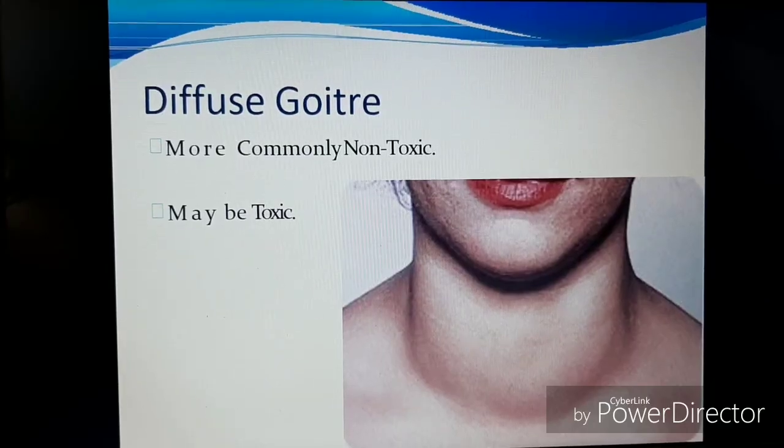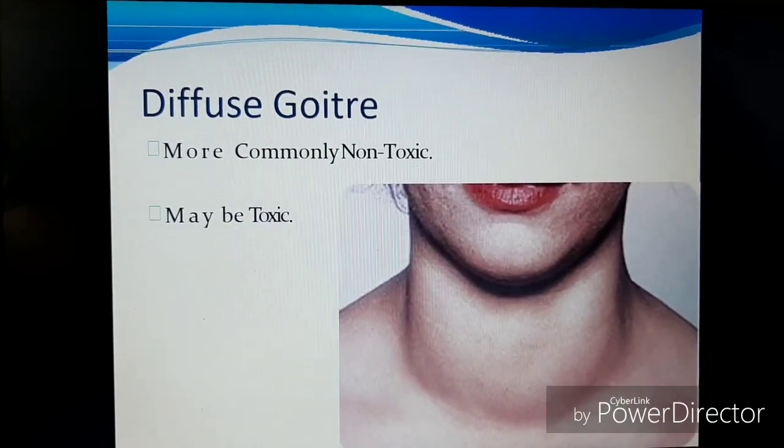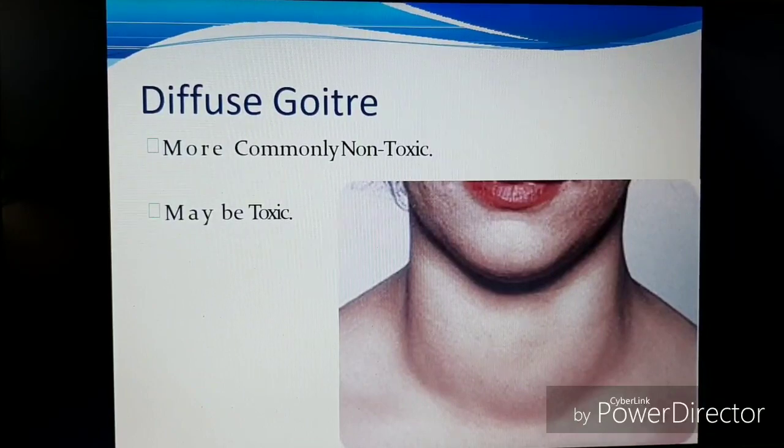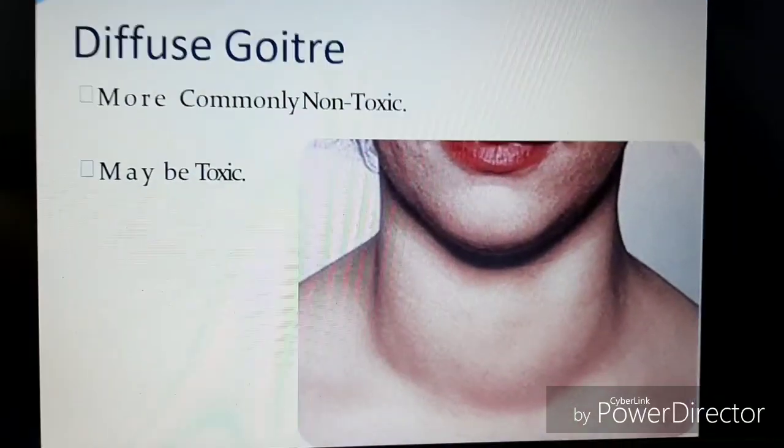Let us come to diffuse goiter. It is also known as Graves' disease, which you may have heard of many times. The first thing to know is there is overproduction of hormones. Most commonly it is known as non-toxic, but it may also be toxic. You can see the enlargement of the throat. There is also another type — diffuse non-toxic goiter — which is not related to hypo or hyperthyroidism, but there is hyperplasia or hypertrophy, meaning an increase in cell mass or the whole body of the thyroid gland.